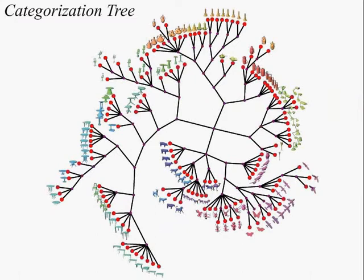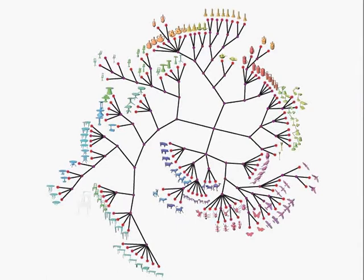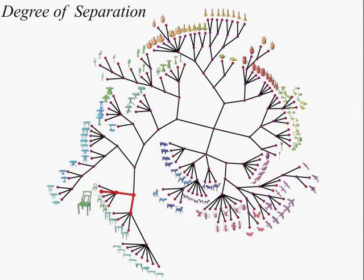All shapes in the collection reside at the leaves of the tree. The number of edge hops between the shapes reflects their degree of separation.